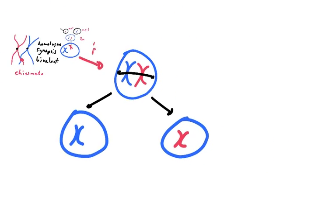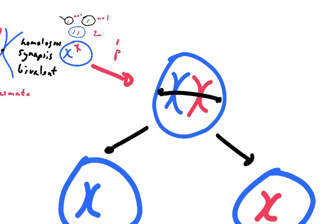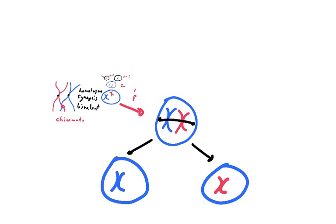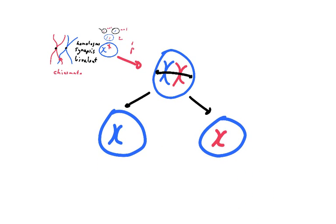They're going to get pulled apart, and the cells then are going to split. There were two chromosomes here, two chromosomes there, two chromosomes there. And now at the end of meiosis I, there is one chromosome here and one chromosome here. So we've gone from being a 2N cell to being an N cell — from diploid to haploid.